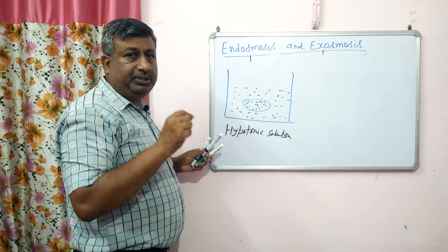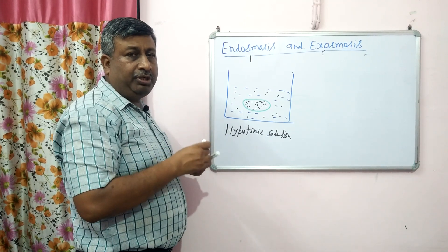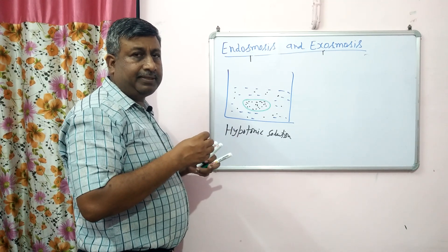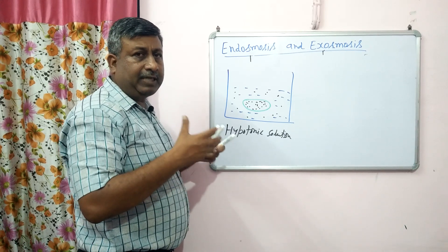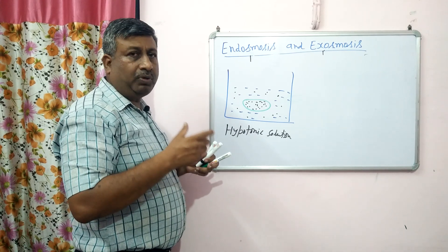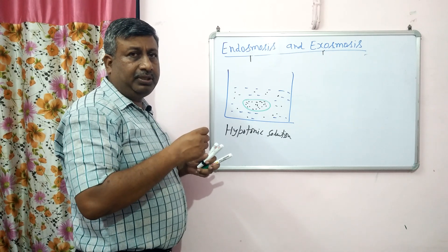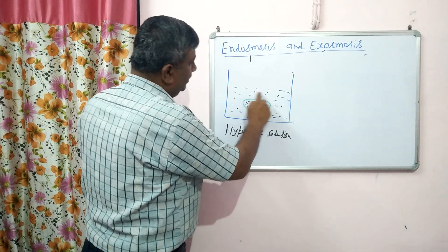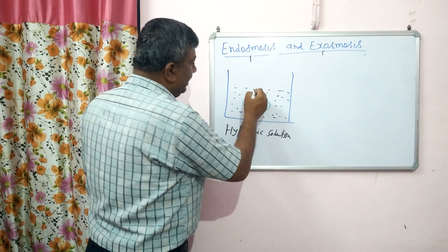Solutes decide the free energy of water. With more solutes, there is more attraction of water molecules to the solute, so the free movement of water reduces — free energy is lower. If solute concentration is less, free water molecules are more available, so free energy is high. The free energy of water is decided by the amount of solute. High concentration solute has low free energy, and low concentration solution has high water free energy. In this case, solution concentration outside is less, so water energy is high.